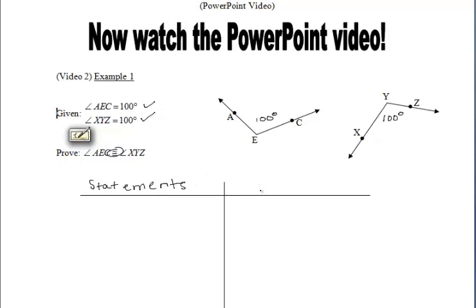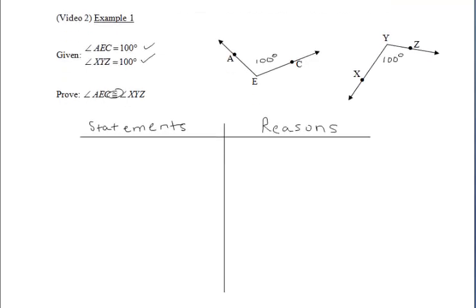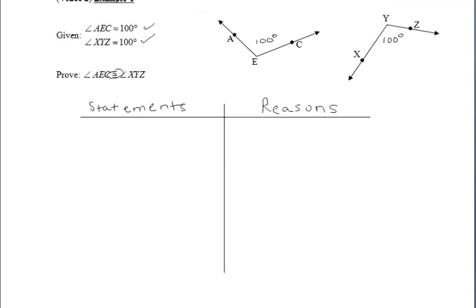Let's go ahead and fill in our two-column proof. We put our statements to the left and our reasons to the right. Keep in mind the statements are specific to the given problem, while the reasons are general theorems, definitions, or postulates.